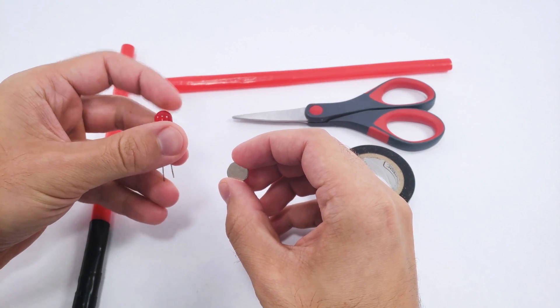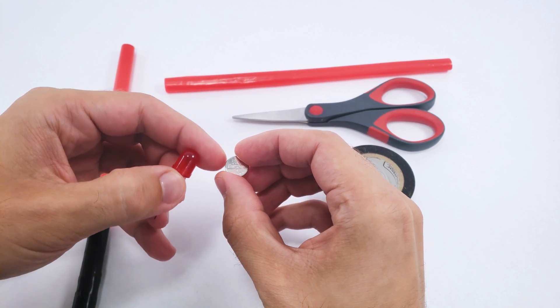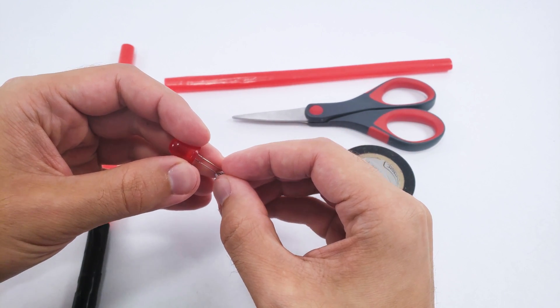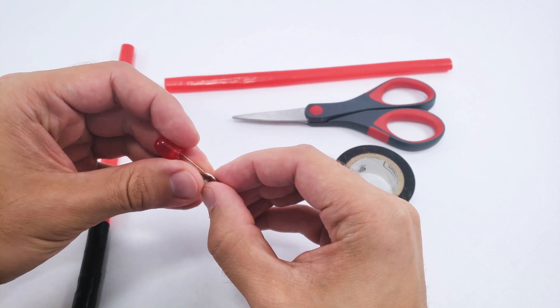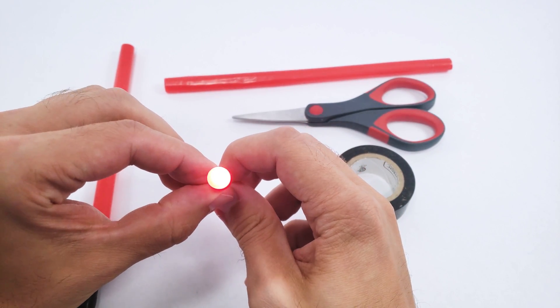Now, these little coin cell batteries cannot provide a ton of current, but it is enough to light up the LED. So if you take the positive side of the battery and press it against the longer leg of the LED and squeeze the battery in between the legs so the shorter leg of the LED touches the negative side, the LED will light up.